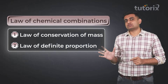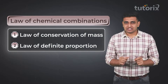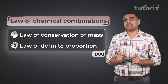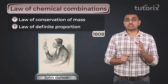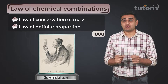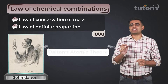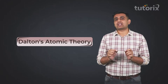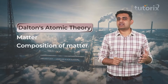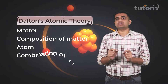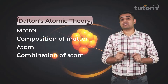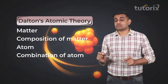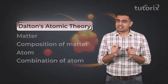However, these laws still need some proper explanation and experimental evidence. And that is why in 1808, an English chemist John Dalton proposed a theory known as Dalton's Atomic Theory. This theory helps us in understanding the concept regarding matter, composition of matter, atoms, and the combination of atoms. So let's start today's session on Dalton's Atomic Theory.